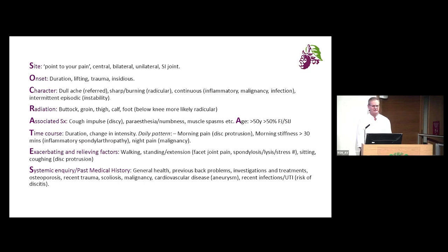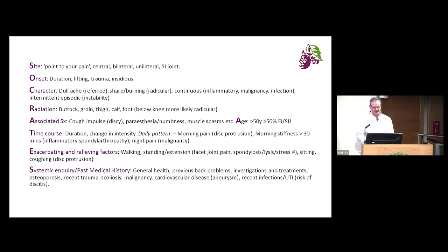Associated symptoms: a cough impulse or pain on sneezing may imply discogenic pain. Paraesthesia and numbness may also imply the same; muscle spasms often accompany any acute pain. 'A' also stands for age — over the age of 50, there is a greater than 50% chance that the pain is facetogenic or from the sacroiliac joint, as opposed to disc pain.